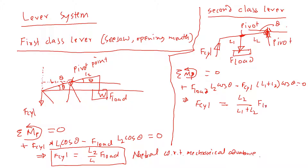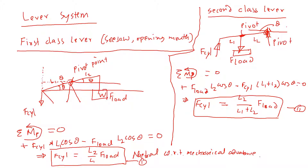Comparing the second-class lever result to the first-class lever, the second-class lever gives a mechanical advantage. Whatever L1 and L2 you use, you need a smaller cylinder compared to the load. So the second-class lever is mechanically advantageous.